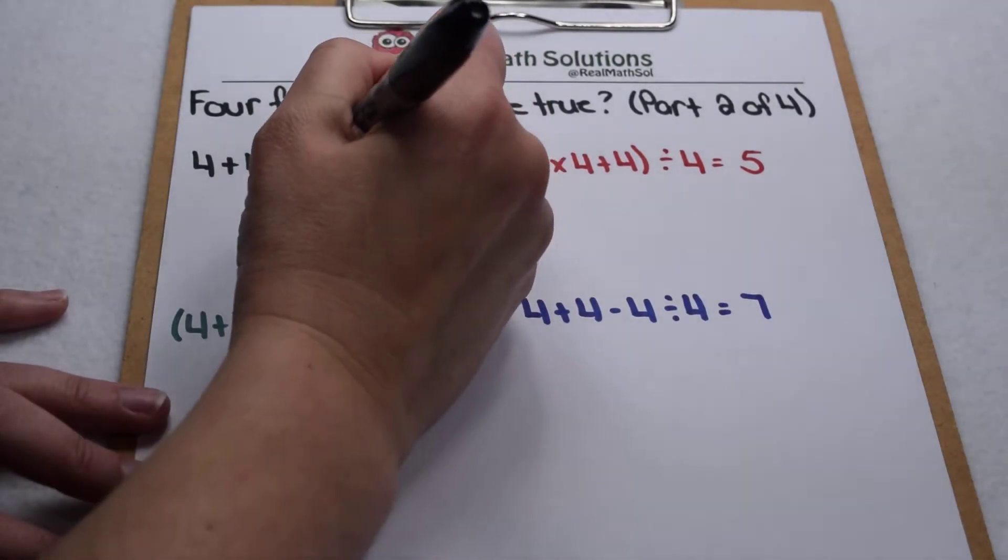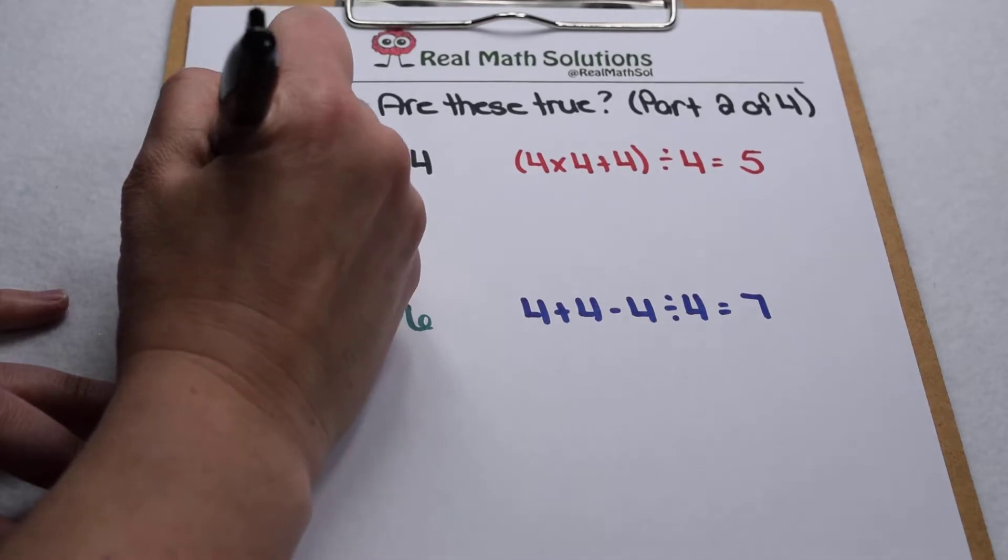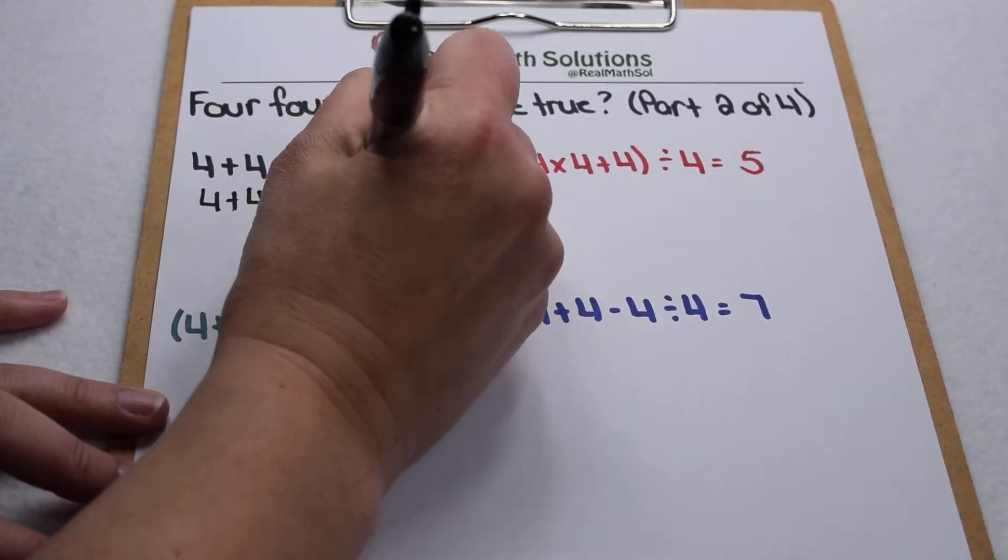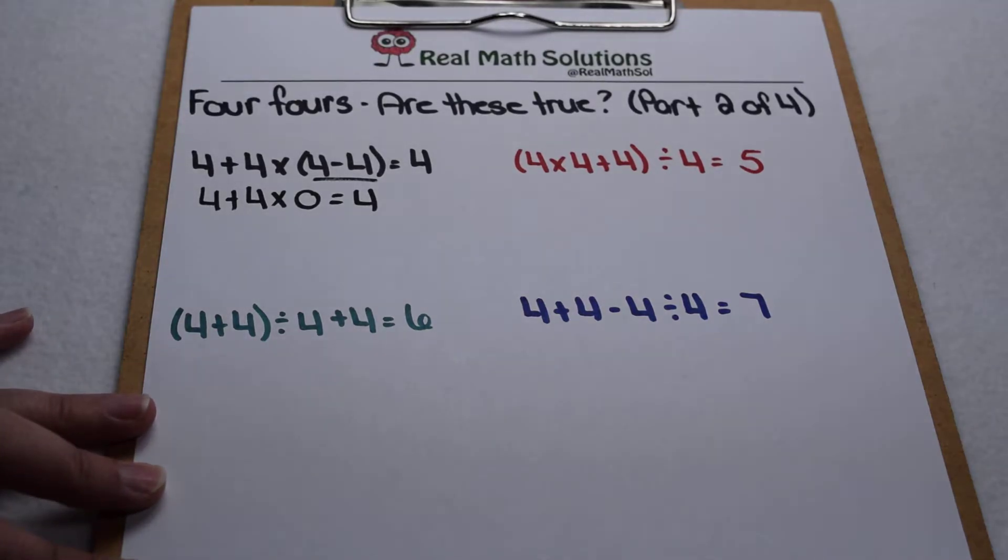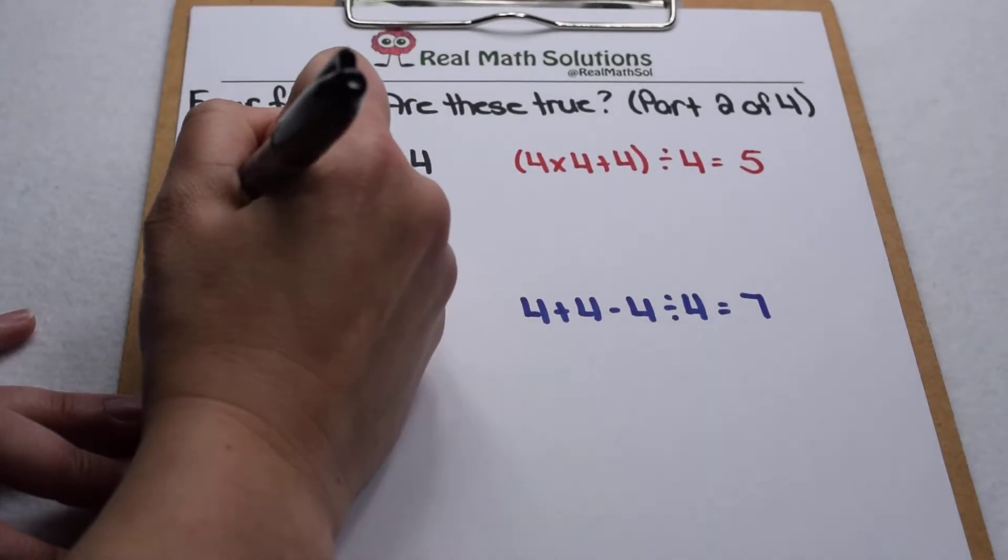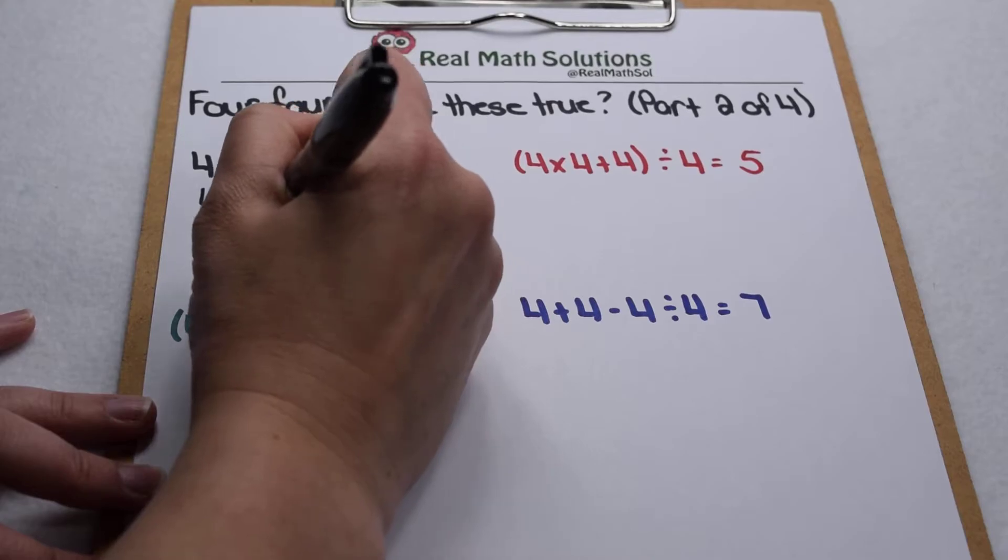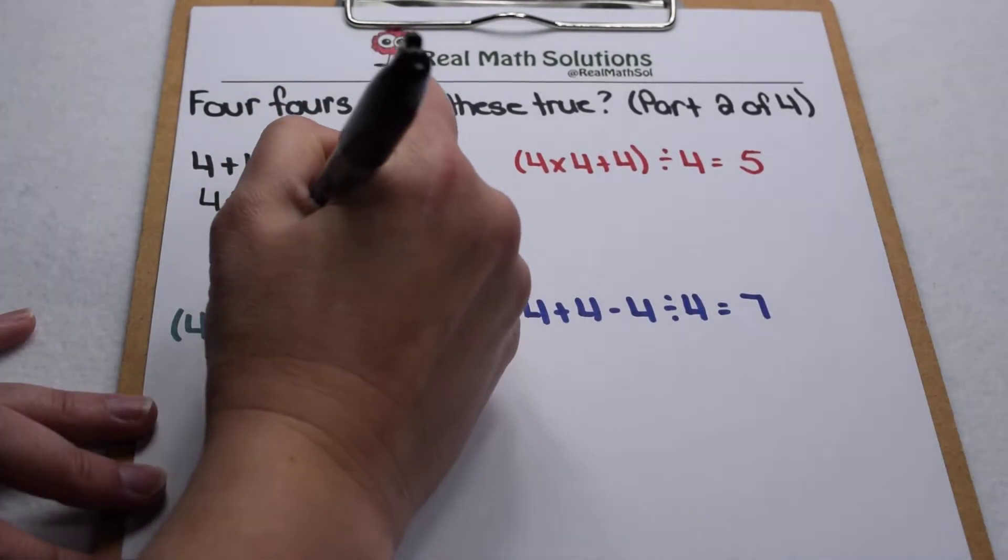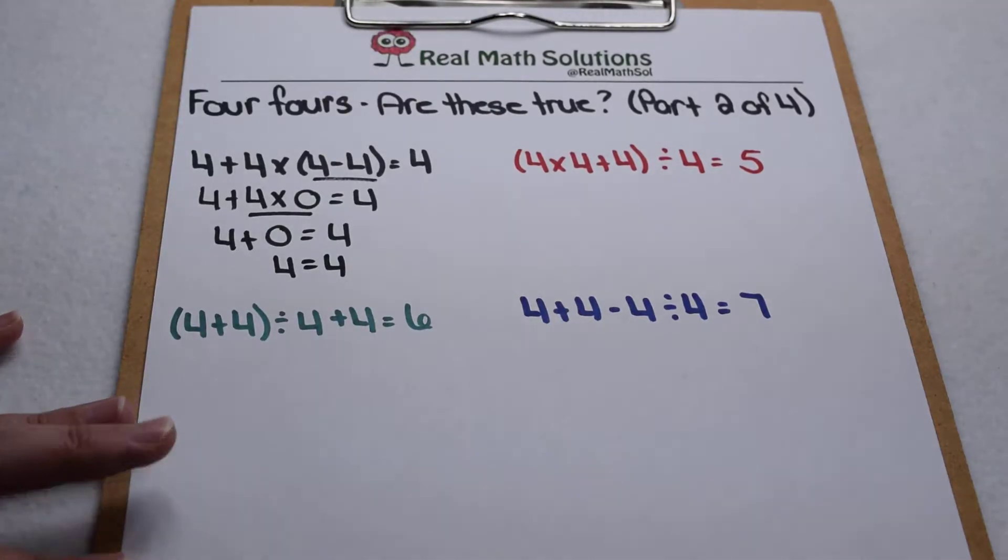Starting with 4, we're going to start with our parentheses. 4 minus 4 is 0. So that leaves us with 4 plus 4 times 0 to equal 4. Order of operations tells us that multiplication comes next. 4 times 0 is 0. So that leaves us with 4 plus 0 to equal 4, and 4 plus 0 does equal 4. So that one checks out.